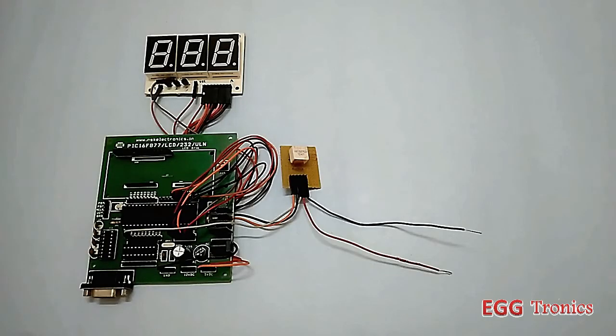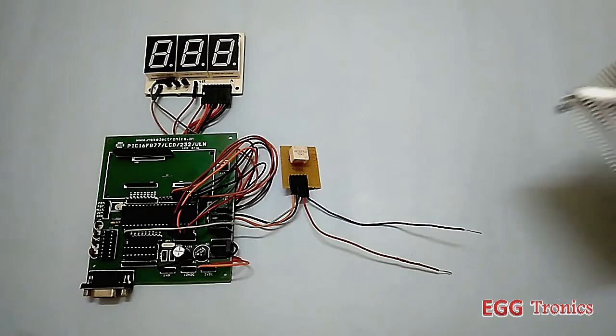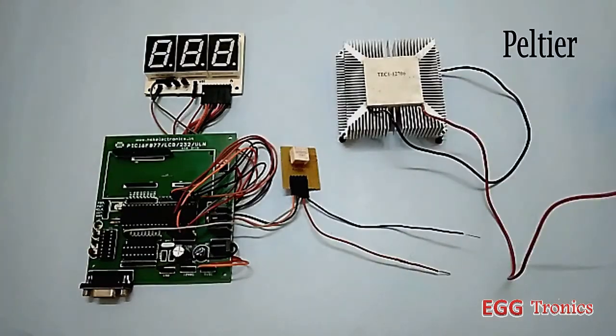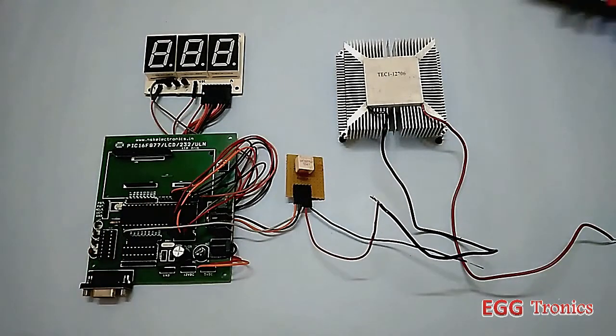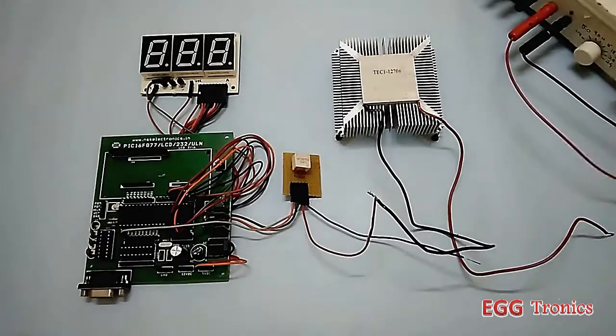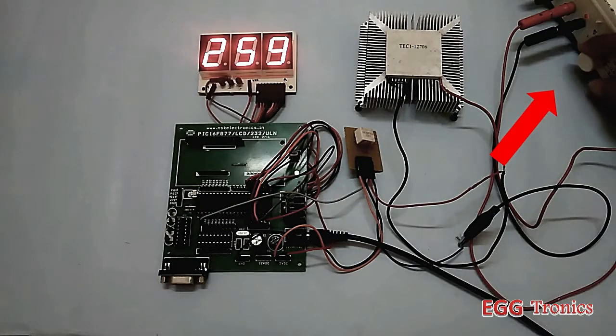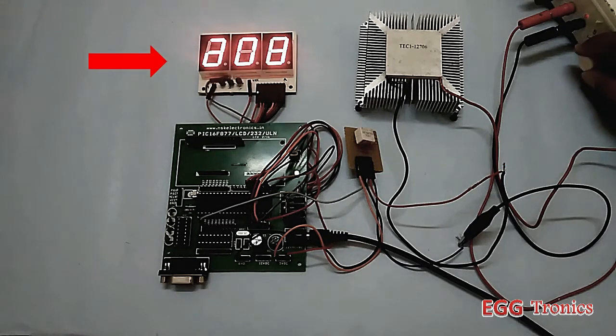For testing we need a source and a load. For the load I'll be using this thermoelectric heater, which is also called a Peltier. It can draw currents up to 4 amps. And for the source I'll be using a variable power supply. Now as you can see, as I vary the voltage to the thermoelectric heater, it will draw a different amount of current.